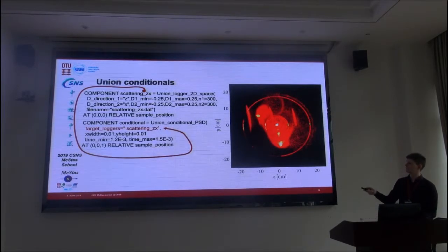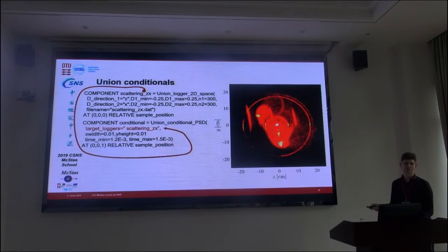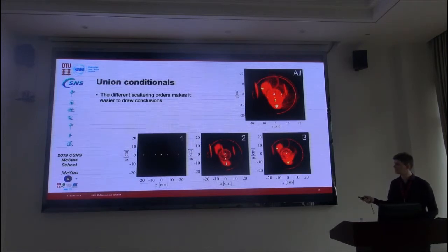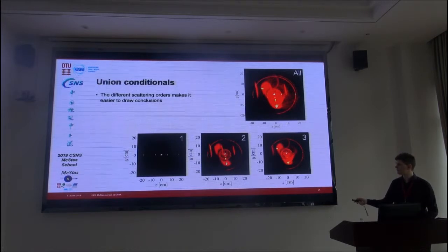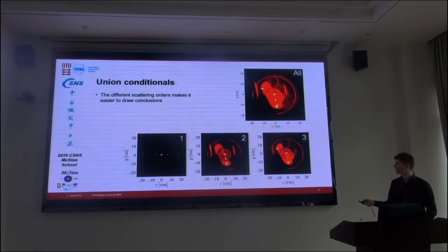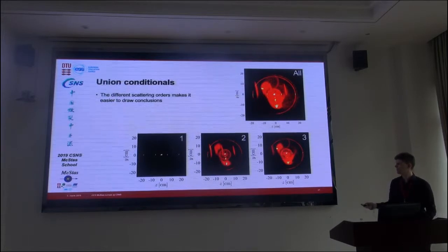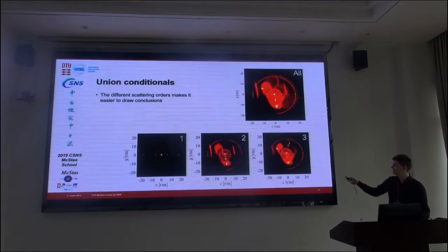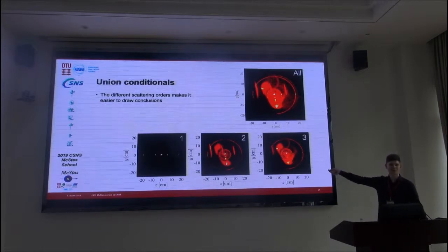But yeah, this name is what's important for the target logger line. Now let's play Sherlock Holmes and figure out where this annoying background peak came from. Definitely the first scattering seems to be in the sample. The second is this position which seems to be probably the mounting plate. And the third one is probably the sample again. But what I don't show here is that the number of neutrons that even make it to the third order is very low. So it's predominantly a second order effect.